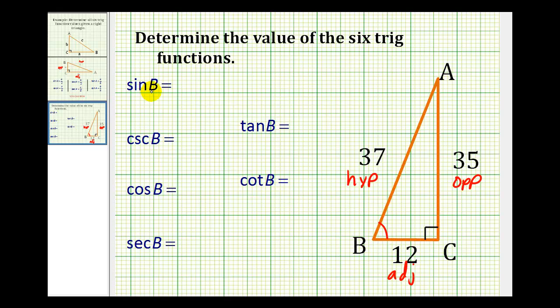So the sine of angle B would be the ratio of the length of the opposite side to the length of the hypotenuse, so we'd have 35/37. Remember, we should always try to simplify these fractions, but this doesn't simplify.